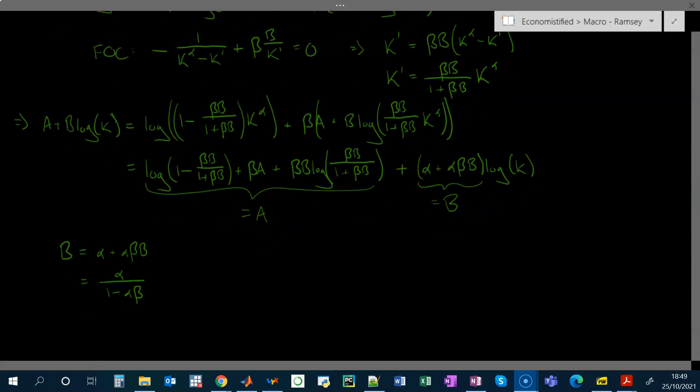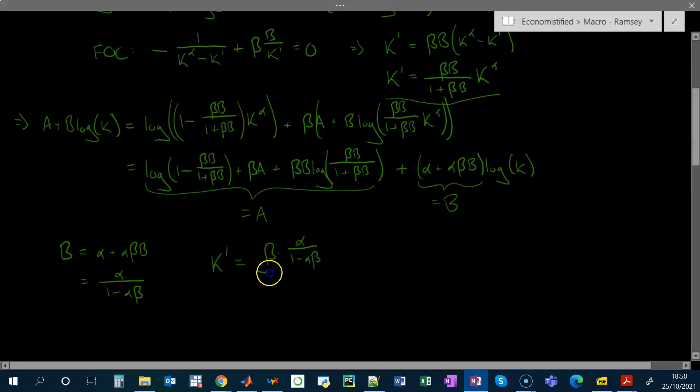Now that we've found the true value function, or at least this coefficient b, we can plug in the value of b into our optimal choice of k prime up here to find the optimal policy choice purely as a function of parameters, getting rid of this previously undetermined coefficient. So let's just plug in b here. And I won't bother doing it, but you can do the calculations here and you should find that this is equal to alpha beta. So our optimal choice of capital is just a constant fraction of output.